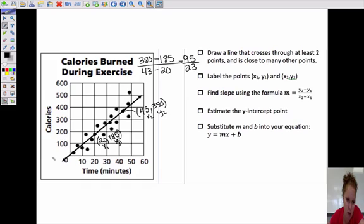And we have to estimate the y-intercept. Well, the y-intercept looks like it might be like maybe 5. And we'll plug in our points. y equals 95 over 23x plus 5.